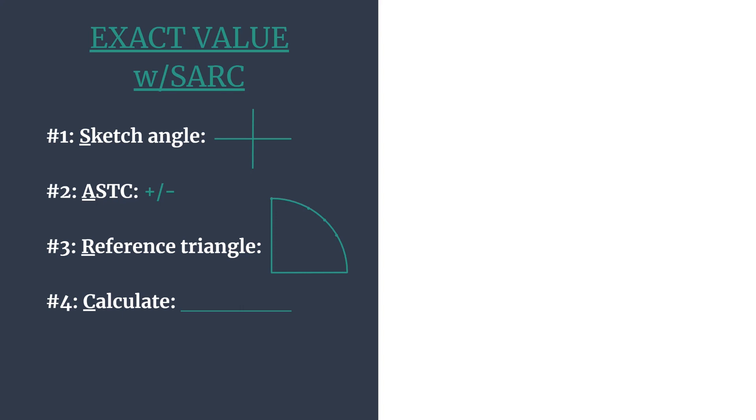R stands for reference triangle. We'll get the reference angle and then think about the special right triangle and the coordinates that go with that angle. And then C will calculate according to our trig ratio.